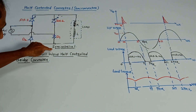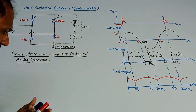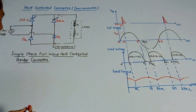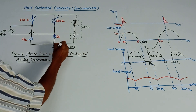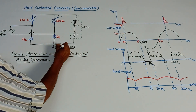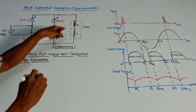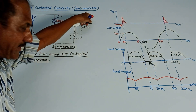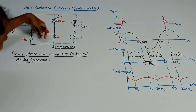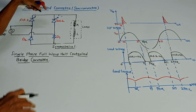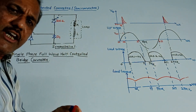Now there are two types. One is the symmetrical circuit or symmetrical configuration, also called the symmetrical semi-converter, which is this diagram.